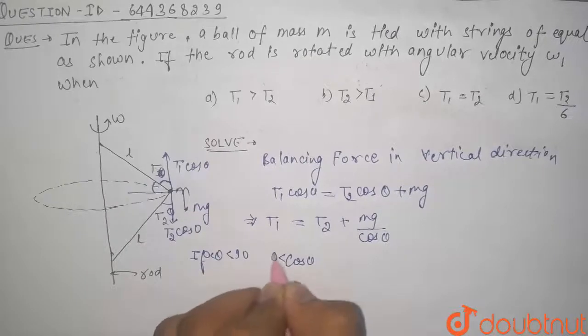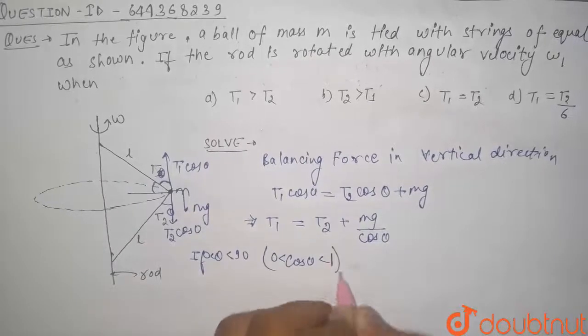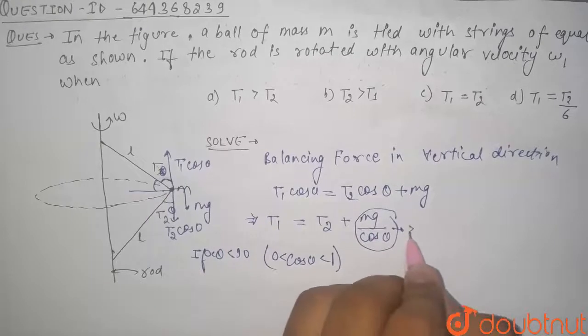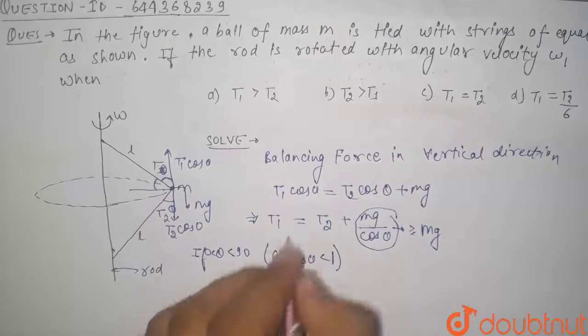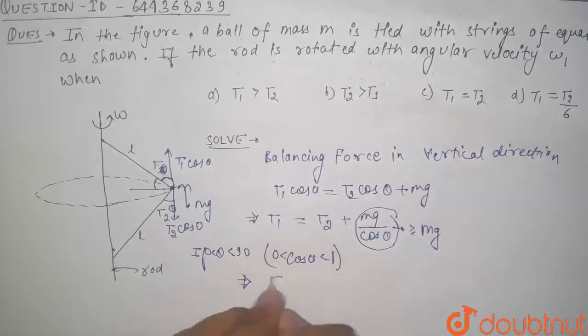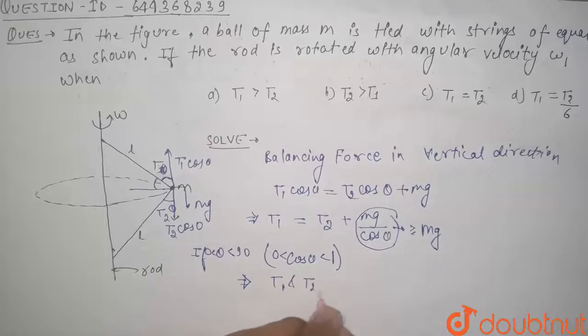Now see guys, we know that if theta will be between 0 to 90, then cos theta will be between 0 to 1. So this quantity will always be greater than or equal to mg.